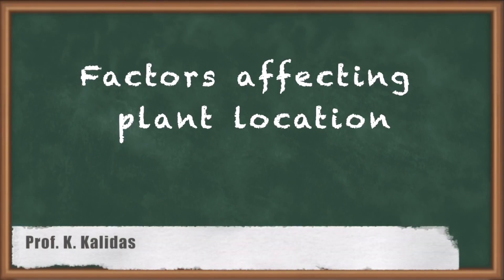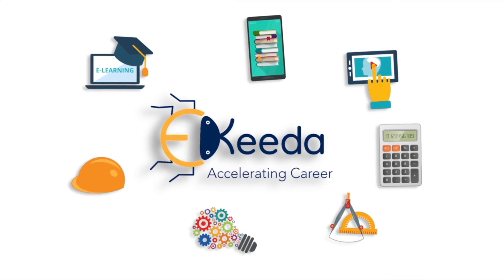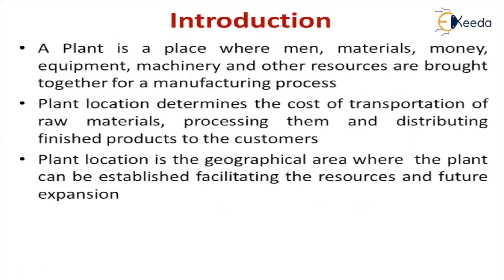Hello students. Today we are going to see the topic: factors affecting the plant location. I am Professor K. Kallidhas. So what is a plant? It is an industry — the place where resources like man, materials, money, equipment and machinery are brought together for a manufacturing process. Plant location determines the cost of transportation of raw materials, processing costs, and distribution cost of the product. It is a geographical area where the plant can be established, facilitating the resources and future expansion.